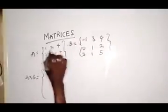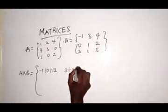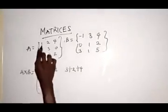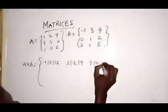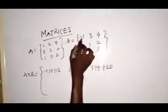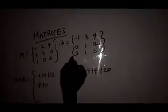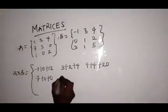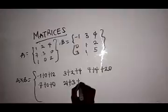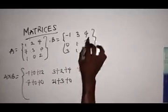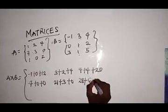Then for the second row: 7 times 3 is 21, plus 3 times 1 is 3, plus 0 times 1 is 0. Then 7 times 4 is 28, plus 3 times 2 is 6, plus 0 times 5 is 0. So the last part of the second row gives entries from those products.